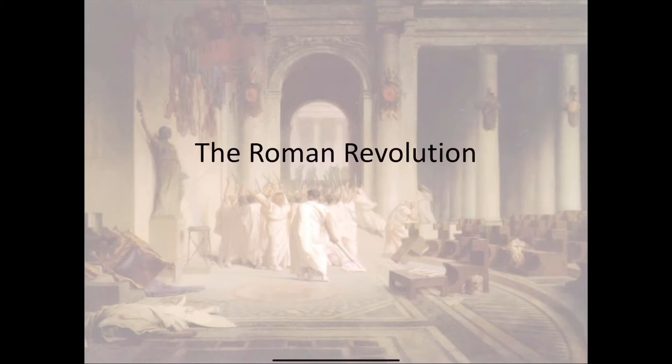One of the most successful republics in history — a republic that lasted about 500 years, twice as long as the American government has been around — begins to fall apart and is replaced by one ruler, one emperor in charge. Our founding fathers were very interested in this. What were the weaknesses of the Roman Republic that led to it completely falling apart and being replaced by one-man rule again? It's an important period of history.